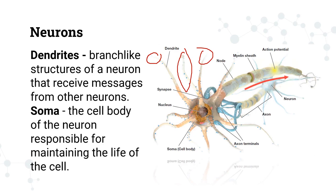Just like any cell in your body, neurons also have a cell body or soma. The cell body is responsible for maintaining the life of a cell. Just like other cells, it contains a nucleus, mitochondria, etc.